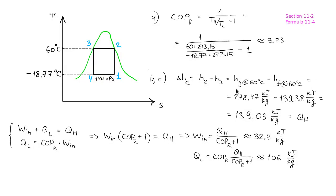So in state 2, the refrigerant is a gas at 60 degrees Celsius and at state 3 it's a liquid at the same temperature. You can take these values from the table.